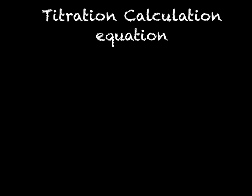Once you have worked out the amount of alkali or acid used to neutralise, you can carry out a titration equation calculation. The equation you need is: moles = concentration × volume. We can also use the rearranging triangle, where M is moles, C is concentration, and V is volume.